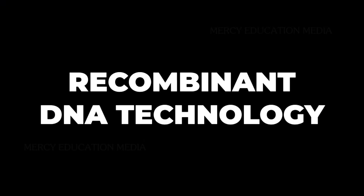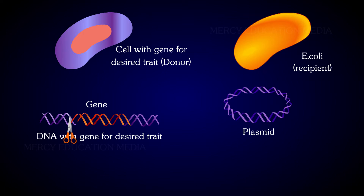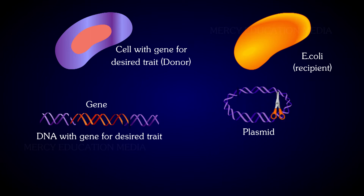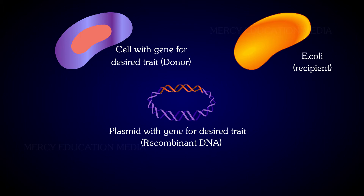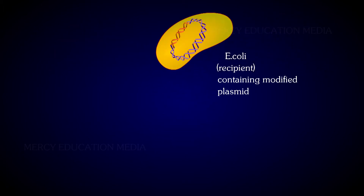Recombinant DNA technology is a technique where the selected DNA of one organism — the donor — is introduced to combine with the DNA of another organism called the recipient organism. As a result, the recipient organism acquires the genetic abilities of the donor.